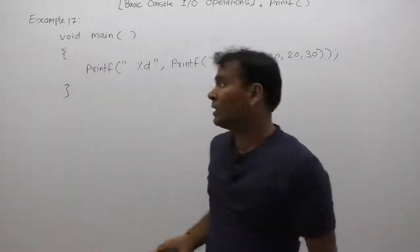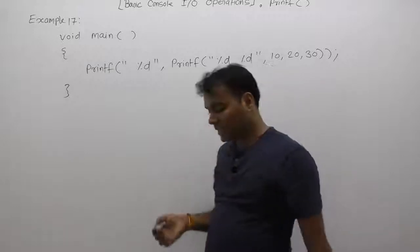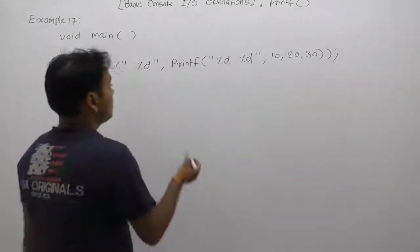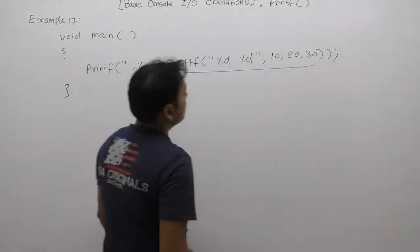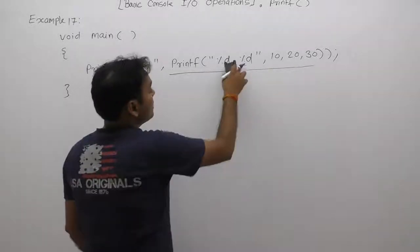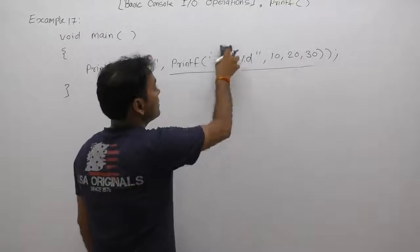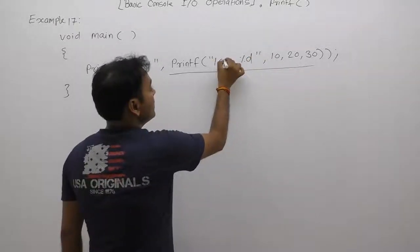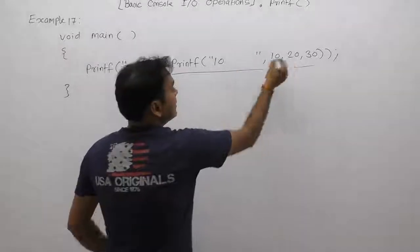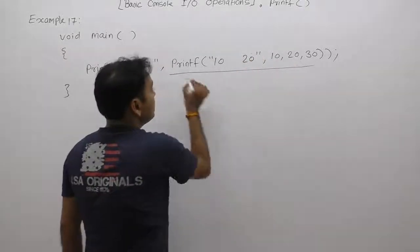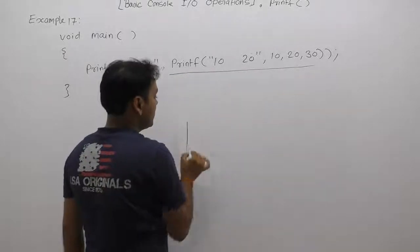Now let's see what is the result of that case. In that case, first of all we are processing the inner printf function. According to the inner printf function, in place of first percent we are replacing the value of the first argument which is 10. In place of second percent we are replacing the argument as 20.